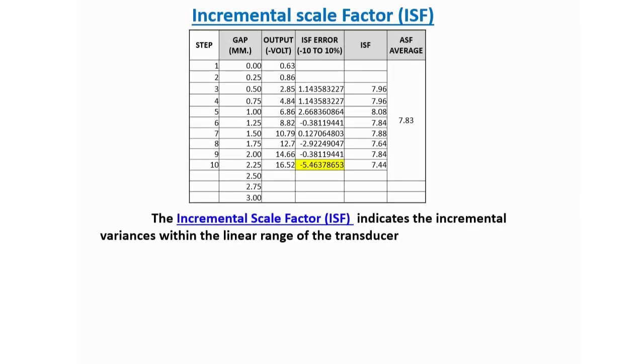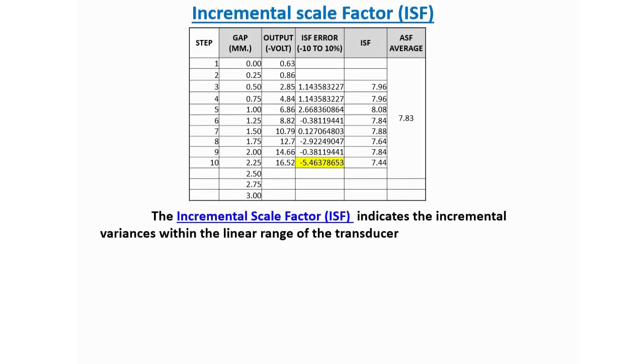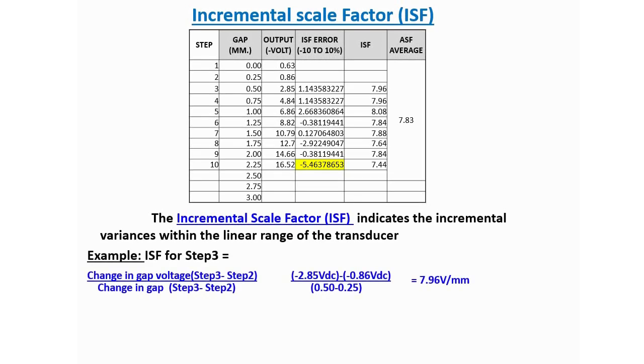The incremental scale factor indicates the incremental variances within the linear range of the transducer. For example, if we see the chart shown here, ISF for step 3 will be 7.96 volts per mm.